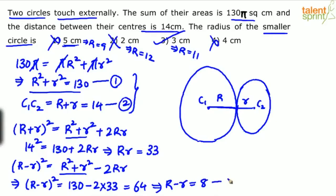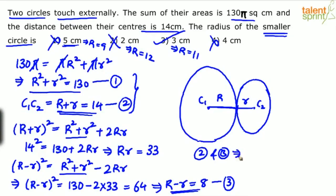Now equation 2 says R + r = 14 and equation 3 says R − r = 8. To find small r, subtract the two equations: 2r = 14 − 8 = 6, so r = 3. The radius of the smaller circle is 3 centimeters. Going by equations takes longer, so substituting from the answer options and verifying which satisfies both is the quicker approach.